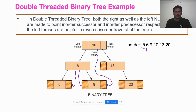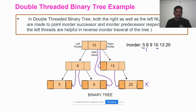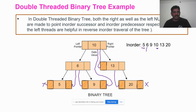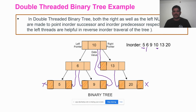For node 13, the left pointer is null. The inorder predecessor of 13 is 10, so this node will be connected to 10. For node 20, the left pointer is connected to the inorder predecessor — the inorder predecessor of 20 is 13, so this will be connected to 13. The right pointer of node 20 has no inorder successor. For the first node with no inorder predecessor and the last node with no inorder successor, we will see what to do in the next slide.